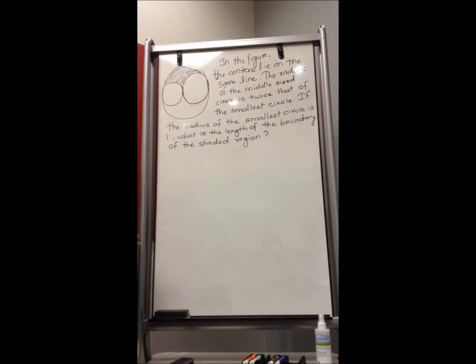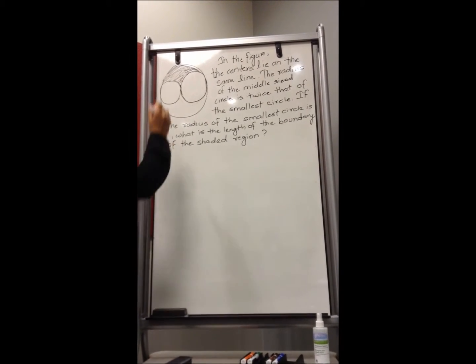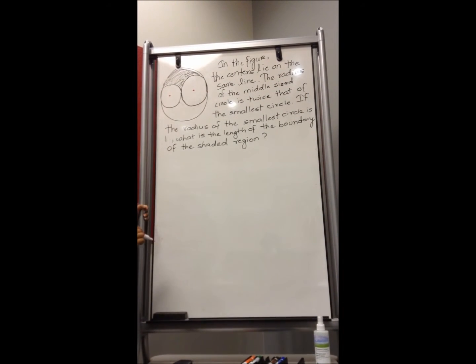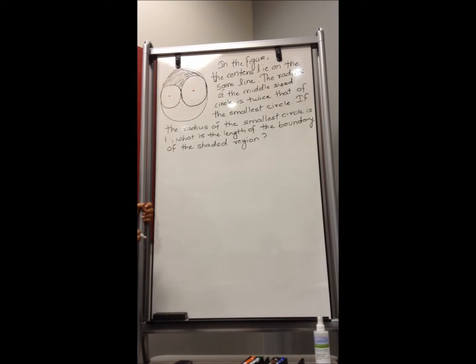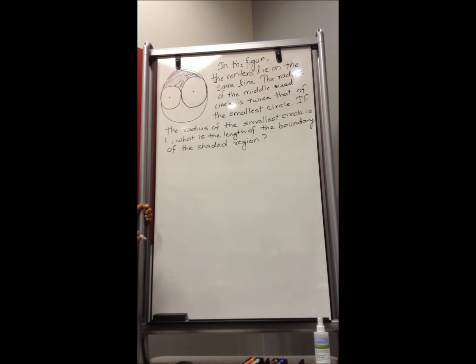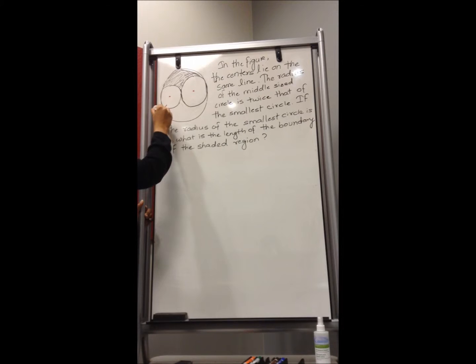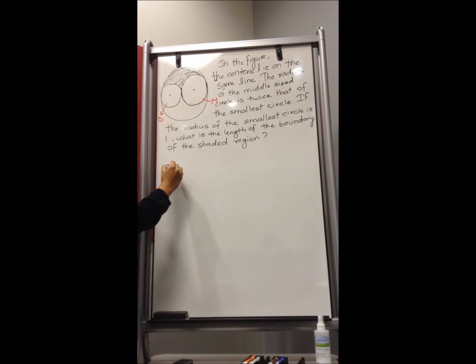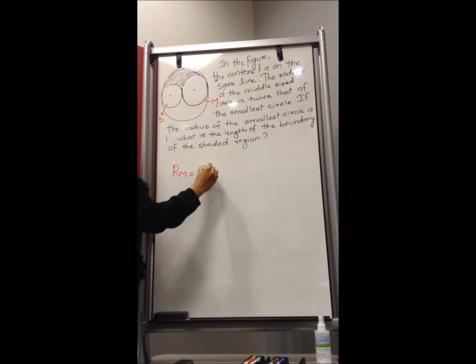The question says, in the figure, the centers lie on the same line. This is my one center and that's my other center, they all lie on the same line. The radius of the middle-sized circle is twice that of the smallest circle. Let's name this as S for smallest circle and this for medium-sized circle, and it says the radius of the middle-sized circle is twice the radius of the smallest circle.